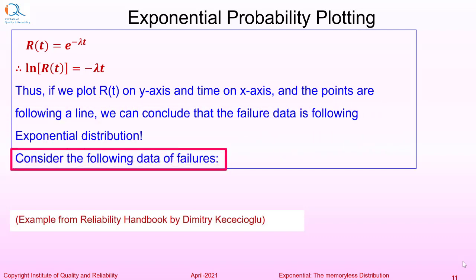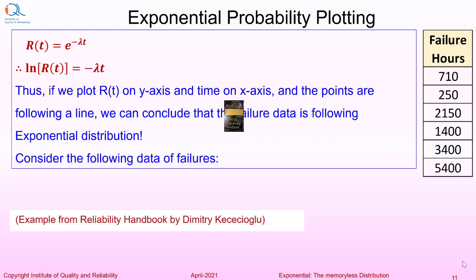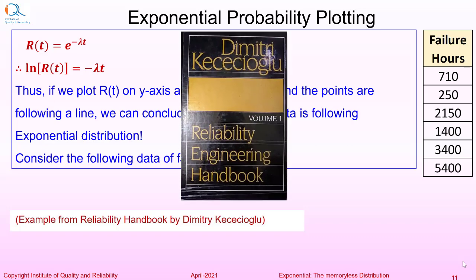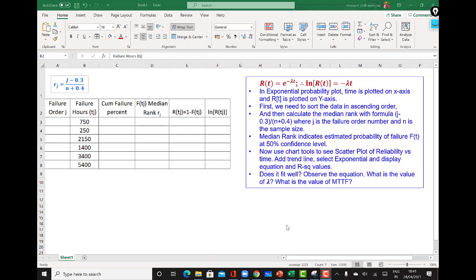Consider the following data of failures. This data is taken from Reliability Handbook by Dimitri Kesecioglu. We will now illustrate the procedure for exponential probability plotting using Microsoft Excel for the data that was shown earlier. This is the data of failures of six components.